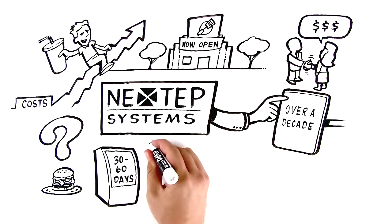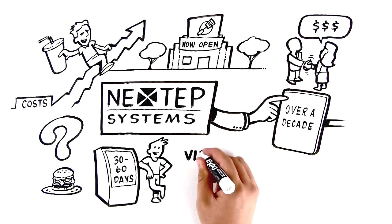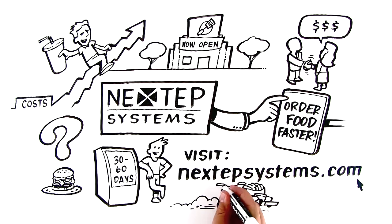In just 30 to 60 days, you can have our self-order kiosks up and running in your stores. Visit nextstepsystems.com to find out how we can help your guests order food faster.